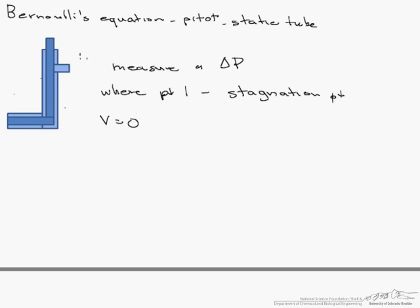So if we start with Bernoulli's equation, it says that P1 plus one half times the density times V1 squared, which is the velocity, plus the specific weight of the fluid times Z1 equals the same thing: P2 plus one half rho V2 squared plus gamma, the specific weight, times Z2.